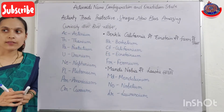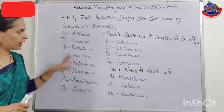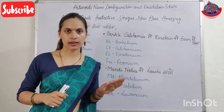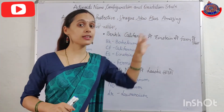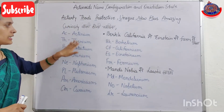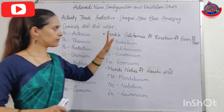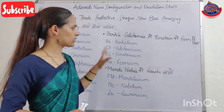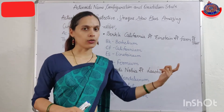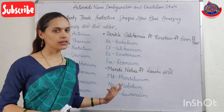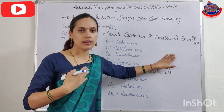So with the help of these three tricks — three sentences — you can easily learn the names of all actinoid members. That is: Actinium, Thorium, Protactinium, Uranium, Neptunium, Plutonium, Americium, and Curium. Then: Berkelium, Californium, Einsteinium, and Fermium. And: Mendelevium, Nobelium, and Lawrencium. So these are the different names of the actinoids.